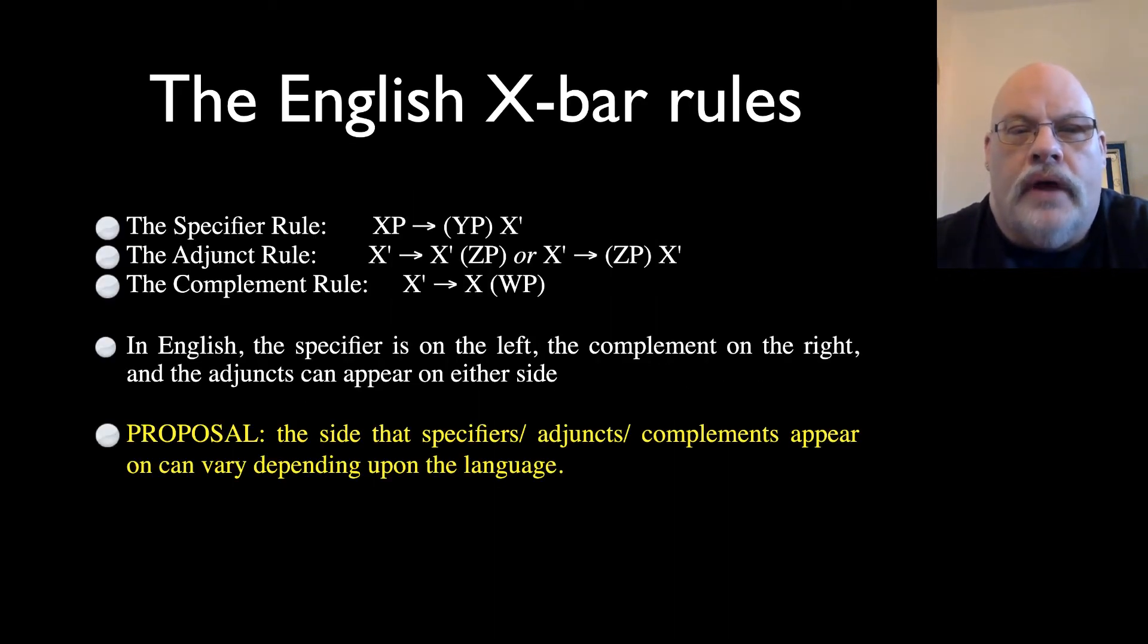So, the English X-bar rules we've proposed are XP goes to a specifier YP before X-bar. The adjunct rule allows the adjunct to either appear before or after the head, and the complement rule puts the complement after the head. But this doesn't work for every language.